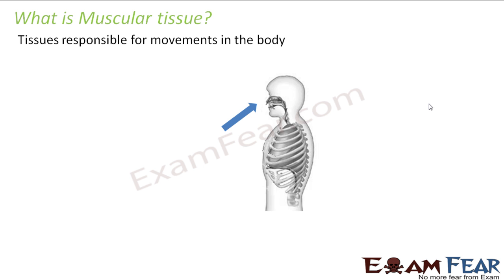So what is muscular tissue? Connective tissue connected the different parts of the body. Epithelial tissue acts as a covering of everything present inside the body. And muscular tissue is responsible for movements in the body. So the tissue which is responsible for movements in the body is muscular tissue. As the name suggests, muscular is derived from the word muscles.